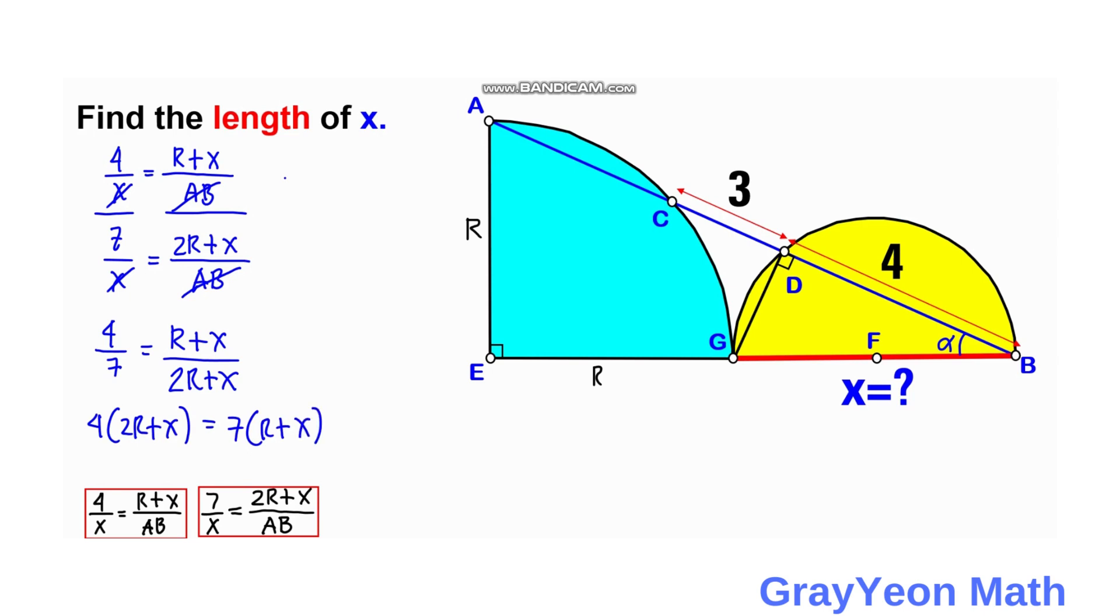This becomes 4 times 2 is 8R plus 4X, equal to 7R plus 7X. If you put this 7R to the left-hand side of the equation, that becomes 8R minus 7R equals 7X. We retain the 7X and put this positive 4 on the right-hand side, so this becomes negative 4X. This becomes R equals 3X.